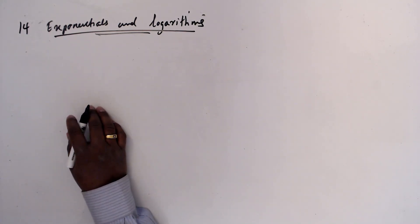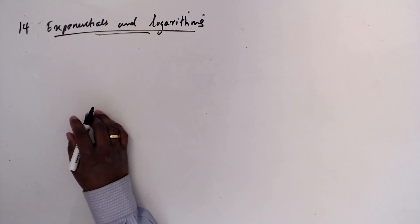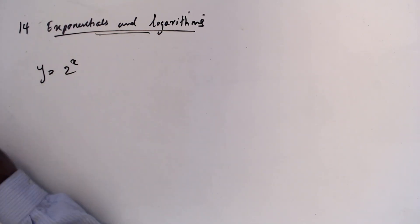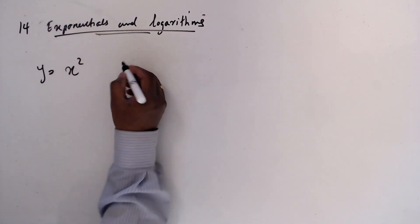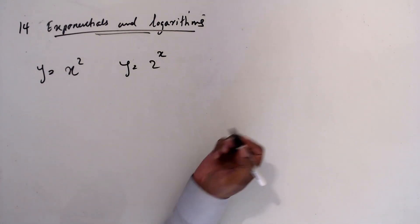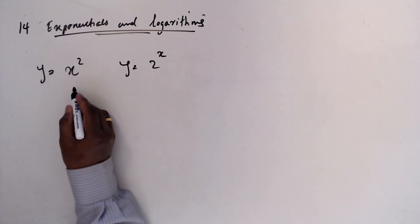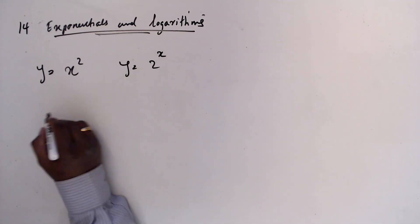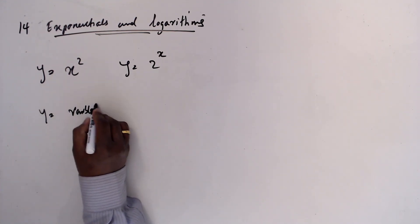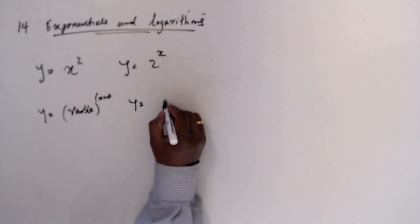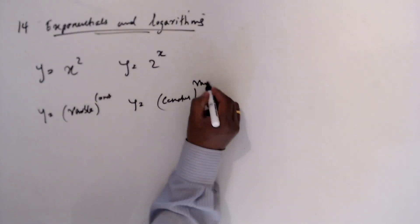Chapter 14: Exponentials and Logarithms. First, we'll discuss what an exponential is. If I write y = 2^x or y = x², what is the difference? Both are functions. Here you can see that y = x² has a variable base and constant power, but in y = 2^x the constant is the base and the variable is the power.